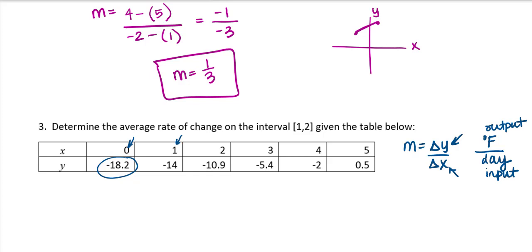Okay, so given a table is really no different, only when you're asked to find the average rate of change, they're going to ask you over a given interval. So you need to know which points you're using here. So I'm going to use the 1 with the negative 14 as its output. That's my starting value. And then you're ending your interval at 2, so that would be 2, negative 10.9. So my slope would be negative 10.9 minus negative 14 all over 2 minus 1.